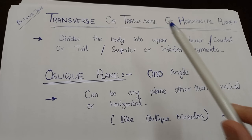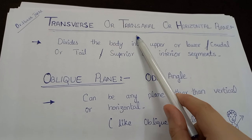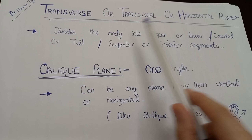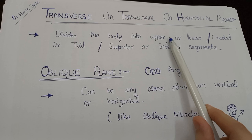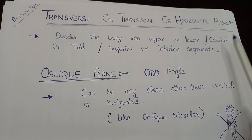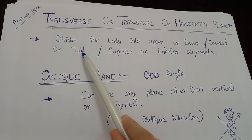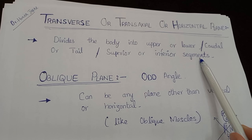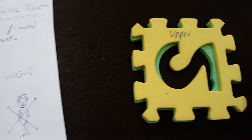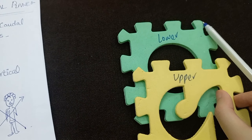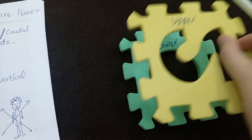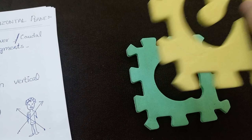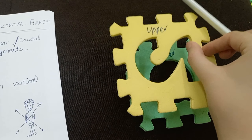Let's talk about the transverse, transaxial, or horizontal plane. This is the plane that divides the body into upper and lower, or superior and inferior segments.